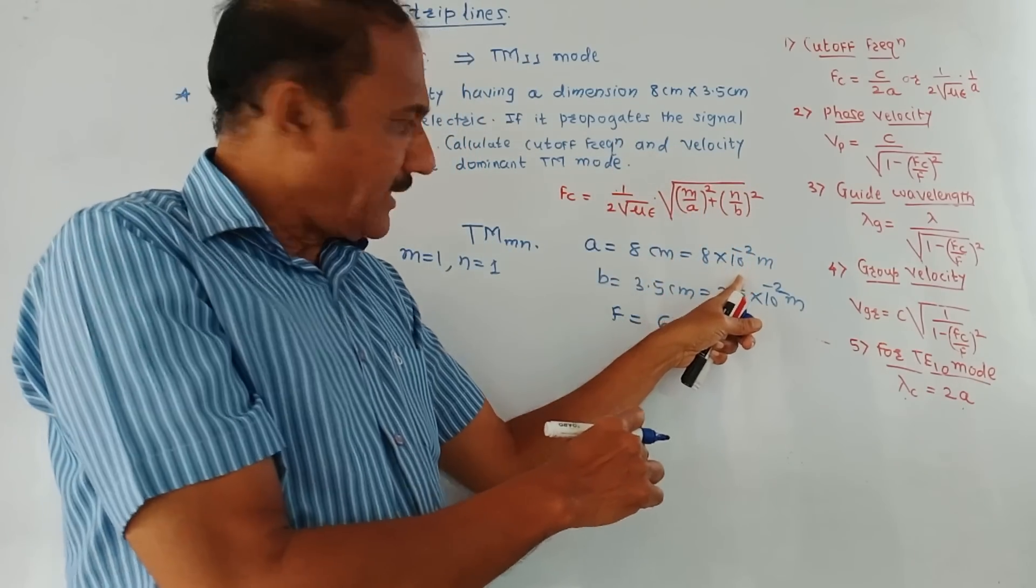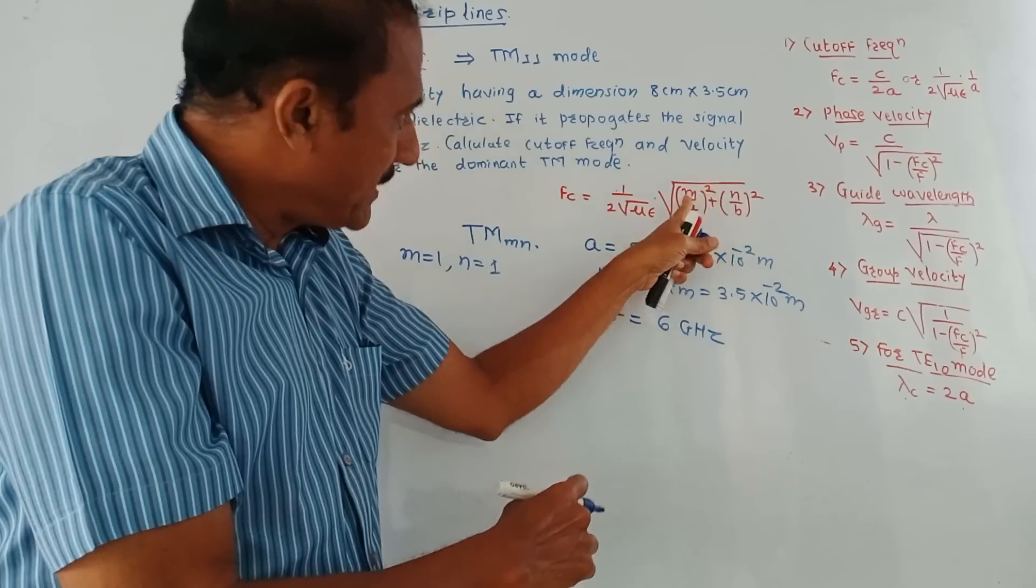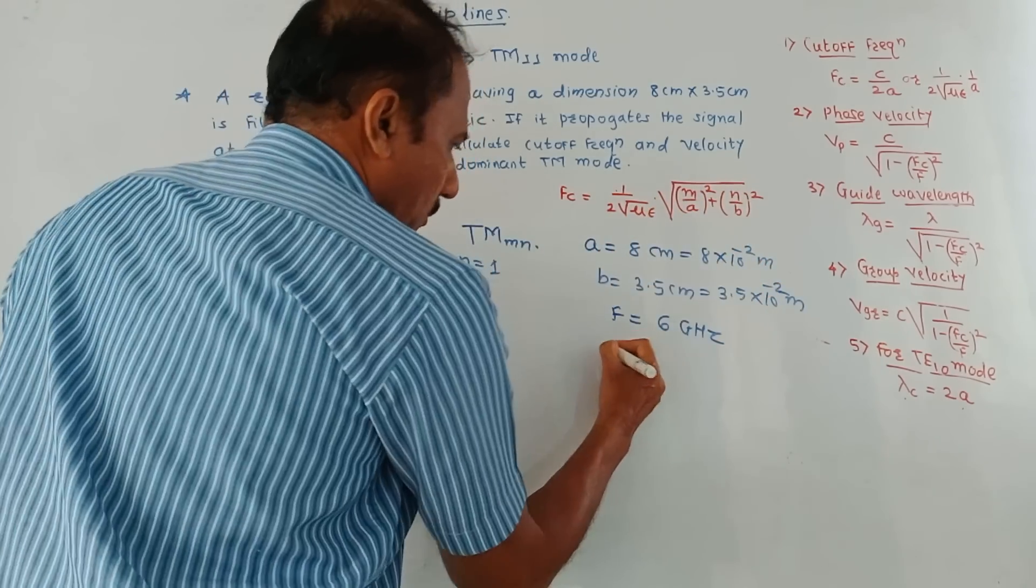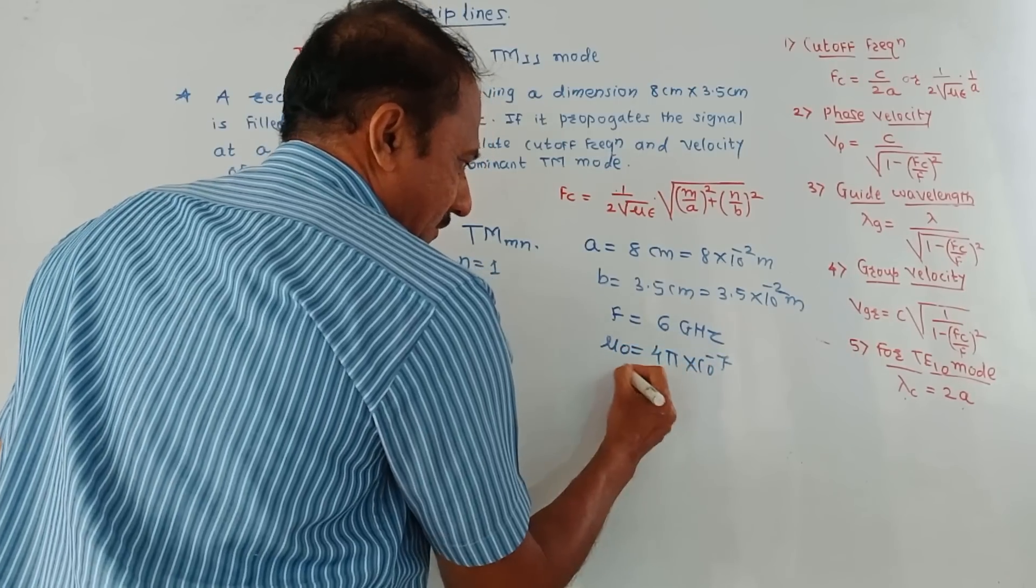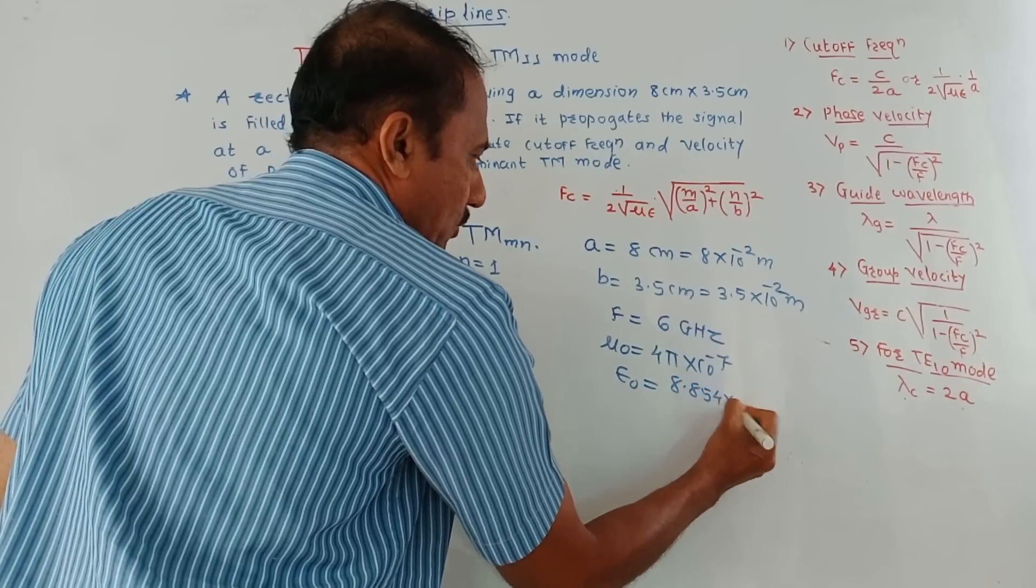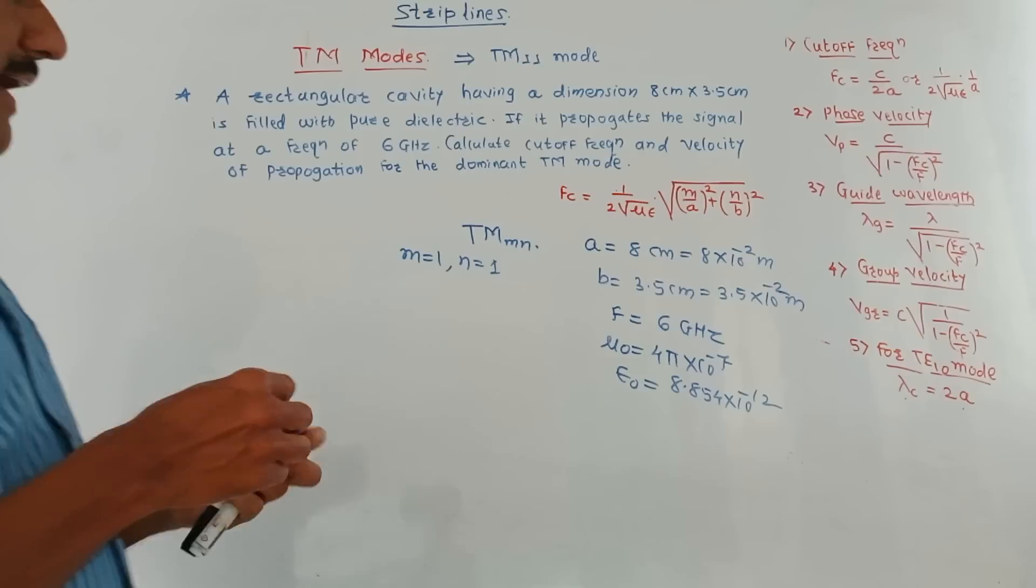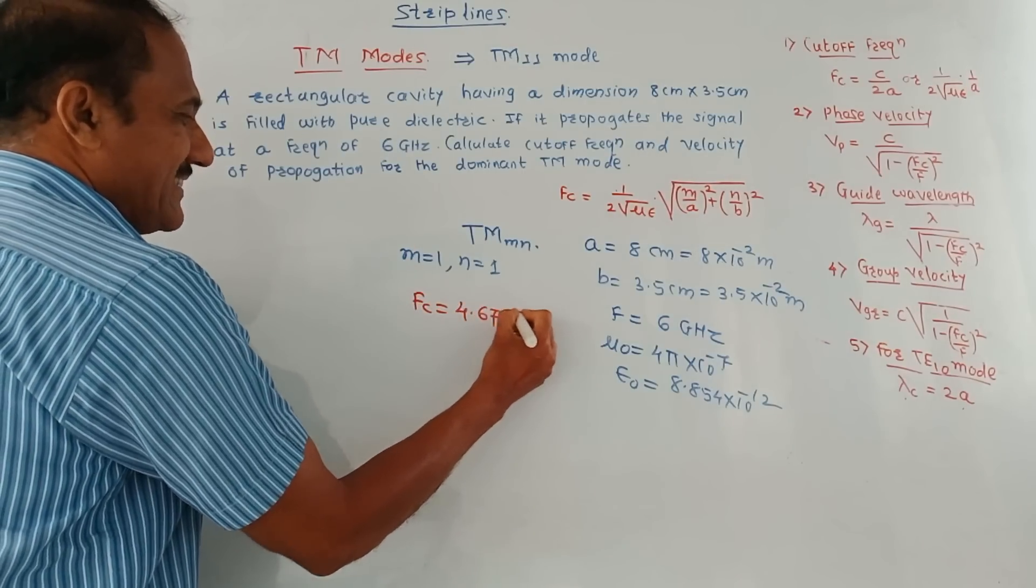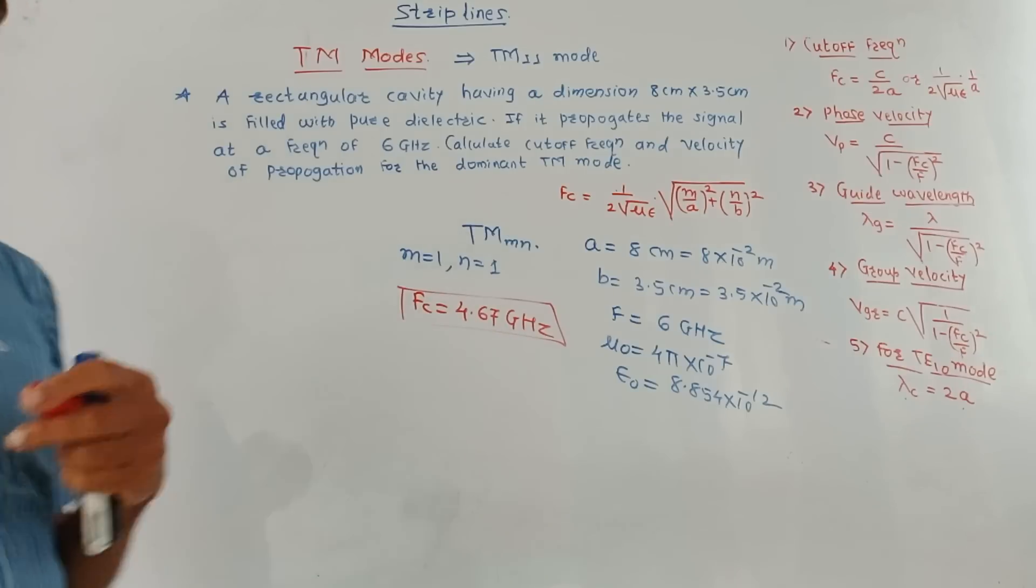So A, we have written 8 into 10 raised to minus 2, value of B is 3.5 into 10 raised to minus 2. M is 1, N is 1. Mu is mu 0. We are considering it as free space. So value of mu 0 we already discussed in last video, 4 pi into 10 raised to minus 7. Value of epsilon, that is epsilon 0, is 8.854 into 10 raised to minus 12. So if you put all these values, then the answer of cutoff frequency, that is FC, will be 4.67 gigahertz. This is the answer of first part, that is cutoff frequency.